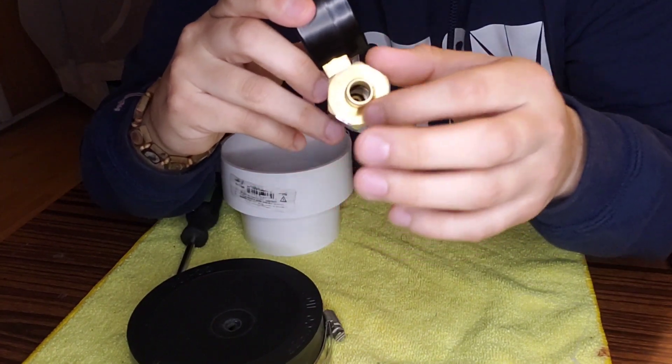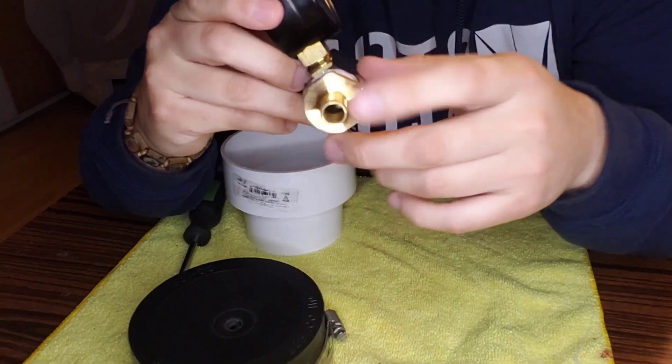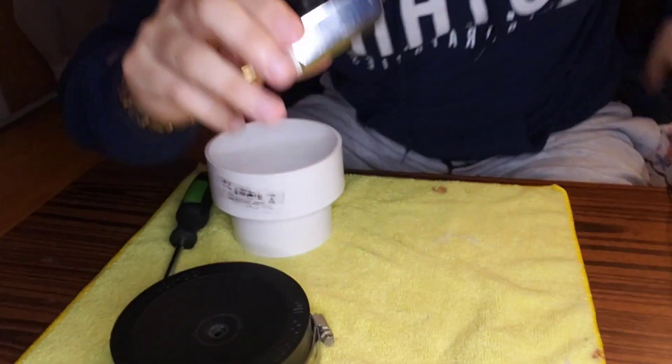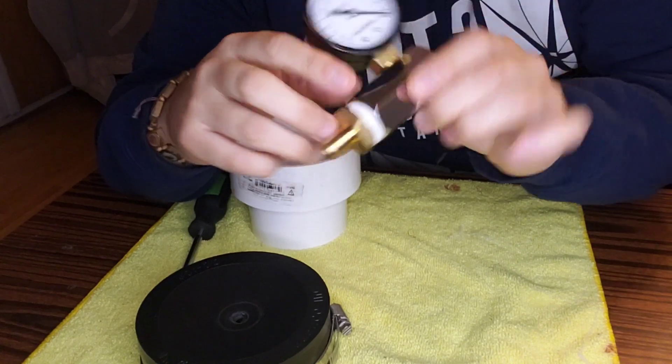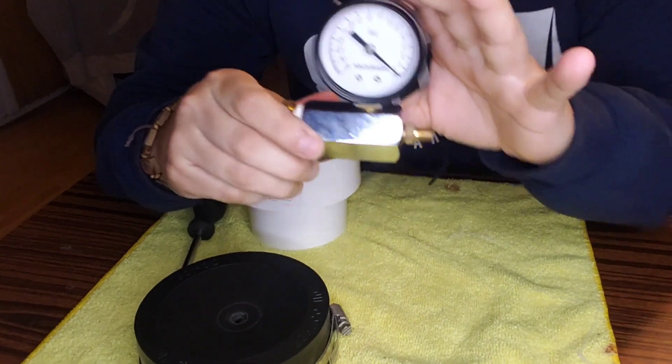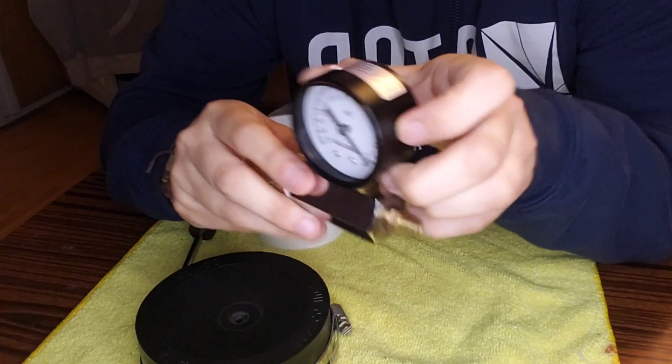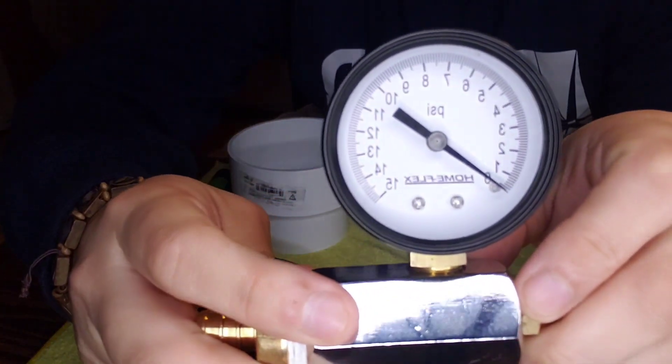This right here is a male fitting that I had to get separate from the, connects to the pressure gauge up to 15 PSI with an air supply fitting on it. You know, I got this, this was the most expensive part out of the whole build.